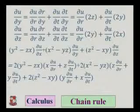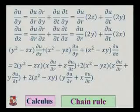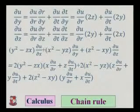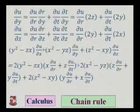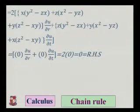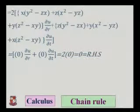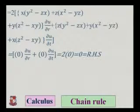Taking 2 outside, we substitute and group: (y square minus zx)(x del u by del r plus z del u by del t) plus (x square minus yz)(z del u by del r plus y del u by del t) plus (z square minus xy)(y del u by del r plus x del u by del t). Taking del u by del r common, the coefficient is x(y square minus zx) plus z(x square minus yz) plus y(z square minus xy). Taking del u by del t common, the coefficient is z(y square minus zx) plus y(x square minus yz) plus x(z square minus xy).